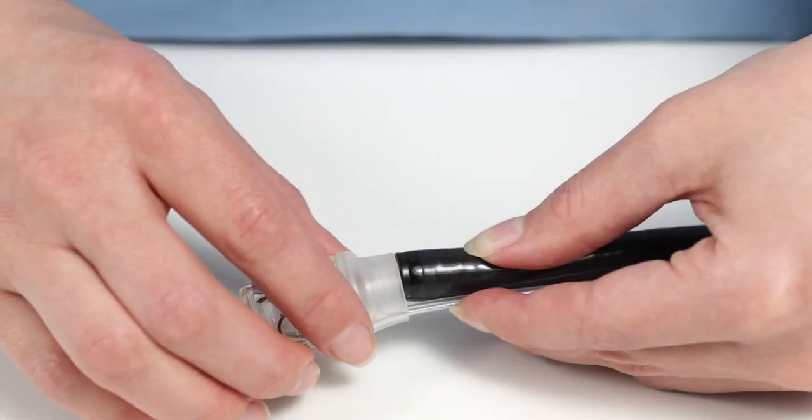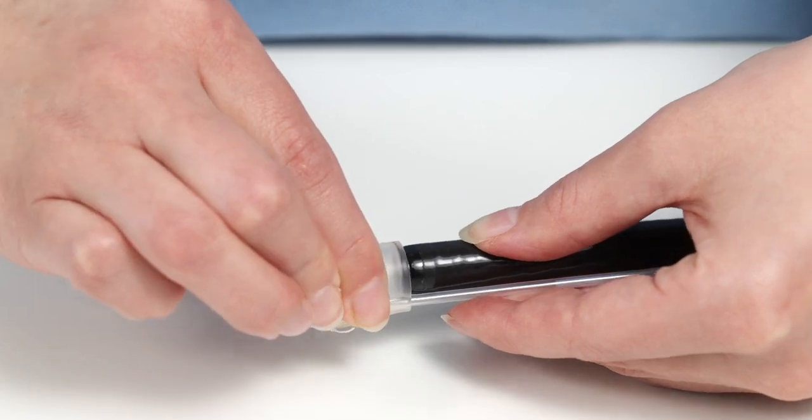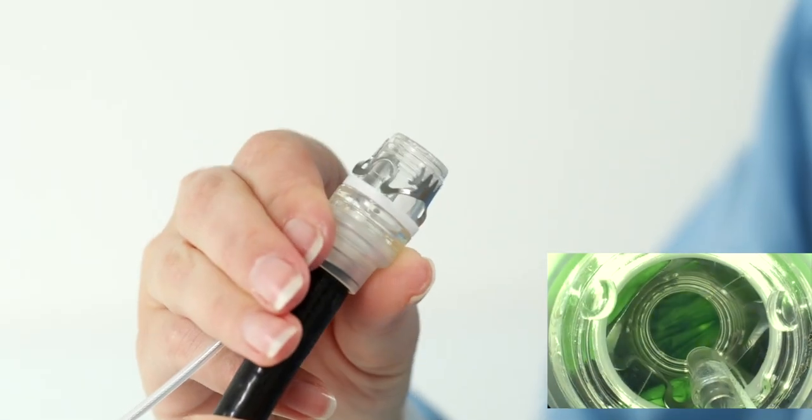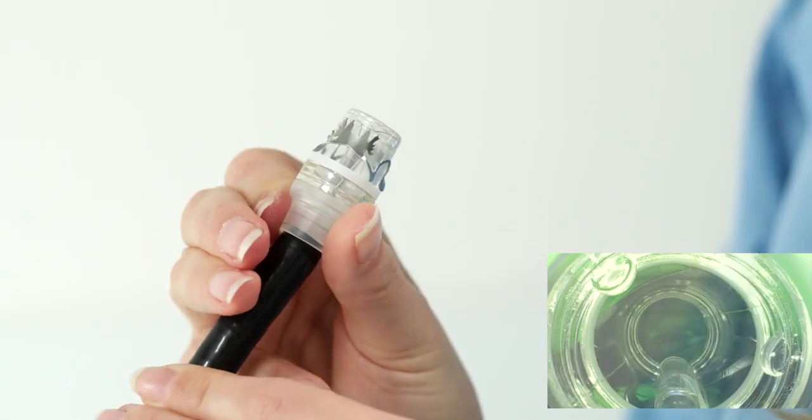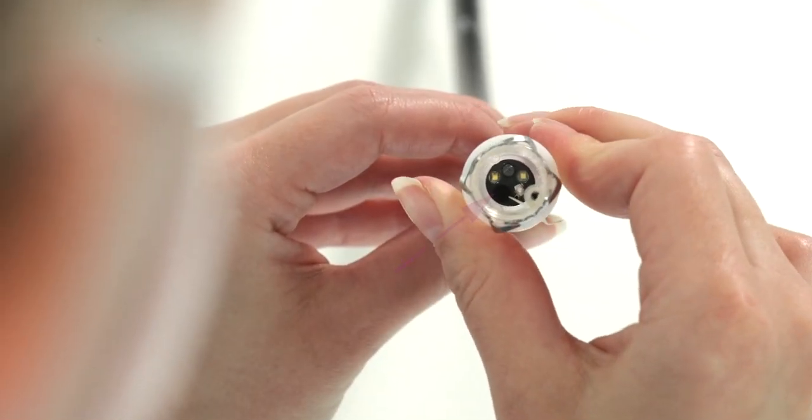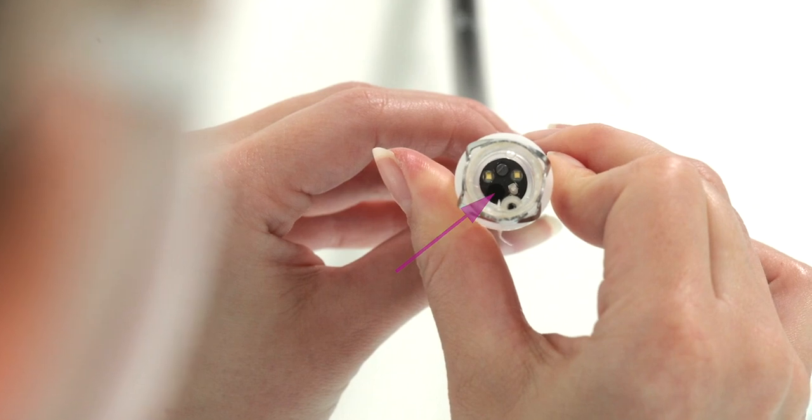To start, place the application cap only lightly on the endoscope tip. The release thread must enter the working channel vertically and not conceal any of the endoscope functions. The working channel should be located directly next to the snare shaft tube, so that the working channel outlet remains clear.